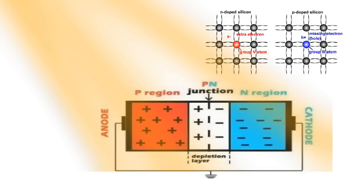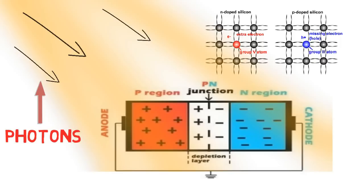Sunlight is composed of particles called photons which radiate from the sun. When one of these photons strikes the silicon cell with enough energy, it can knock an electron out, creating a hole.